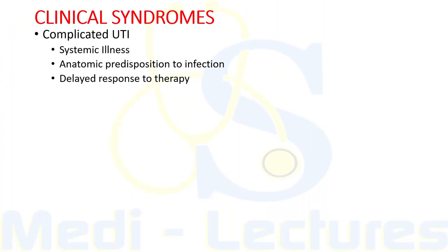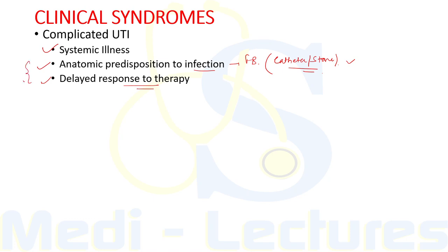Complicated UTI presents as a systemic illness with an infectious focus in the urinary tract. It frequently occurs in patients with an anatomic predisposition to infection such as a foreign body like a catheter or renal/ureteric stone, or features predisposing to delayed response to therapy. These two factors are responsible for converting any UTI to complicated UTI.